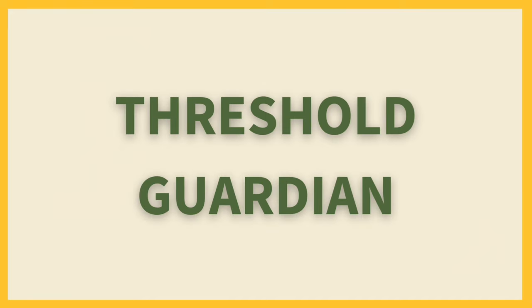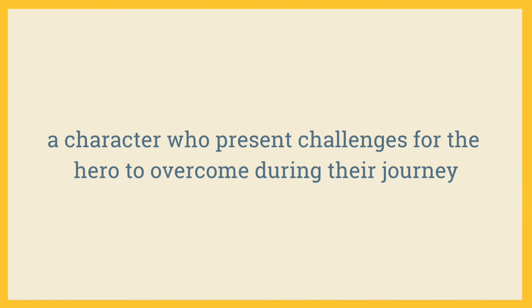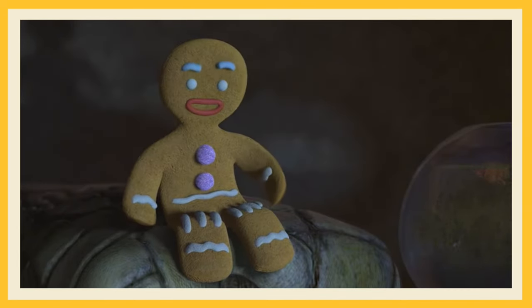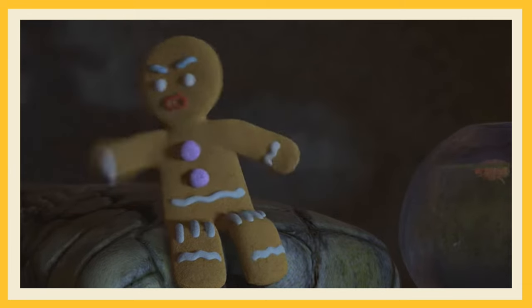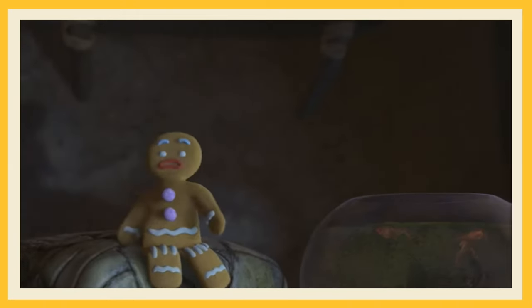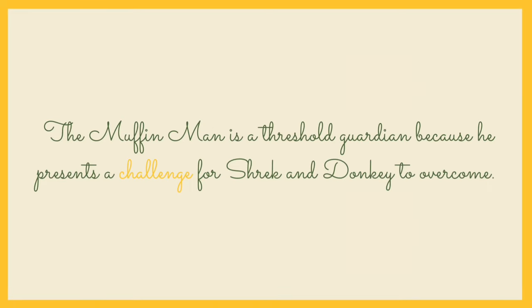Next, we have the threshold guardian — a character who presents challenges for the hero to overcome during their journey. The muffin man is a character who tries to stop Shrek and Donkey from rescuing Fiona. He is a giant gingerbread man with a bad temper. The muffin man is a threshold guardian because he presents a challenge for Shrek and Donkey to overcome.